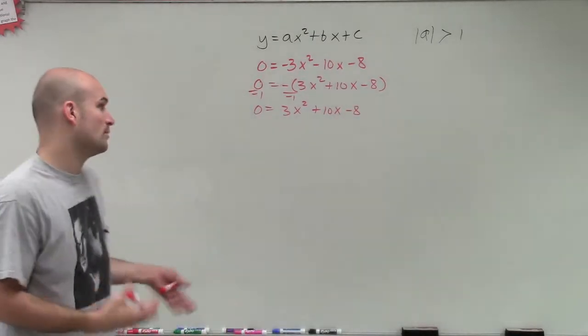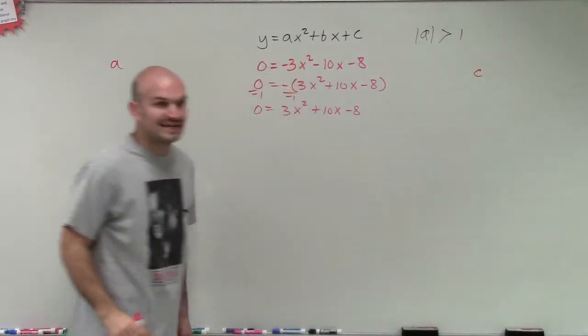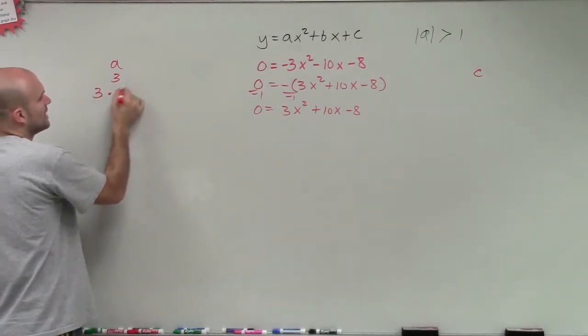So when I'm breaking up this factored form, what I want to do is I'm going to take my A, and I'm going to take my C, and I'm going to break each one of those down into their factors. Well, 3, thankfully, can only be broken down into 3 times 1.